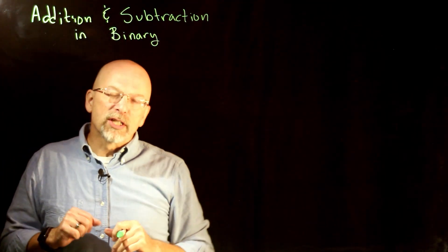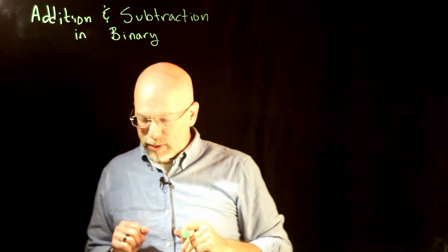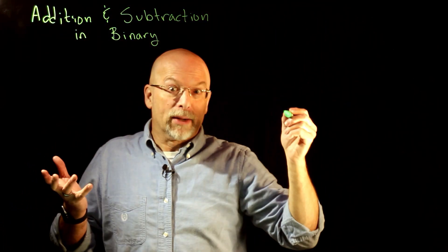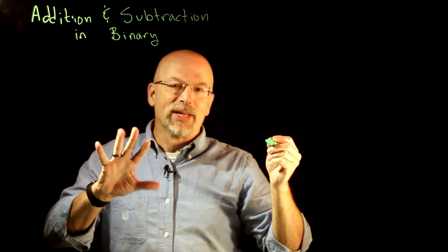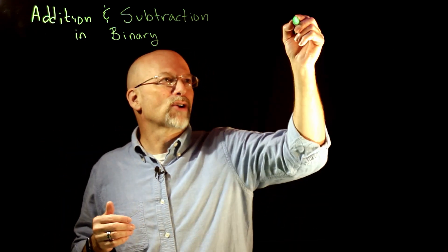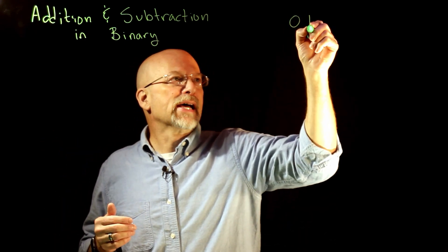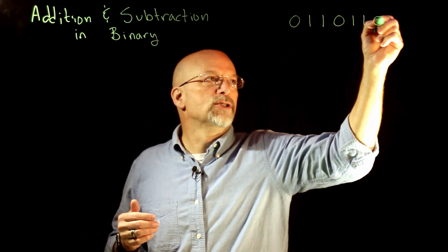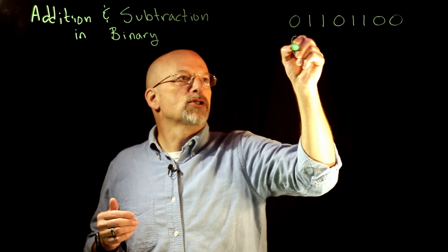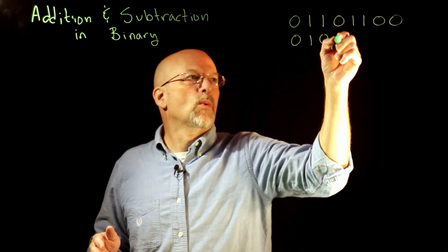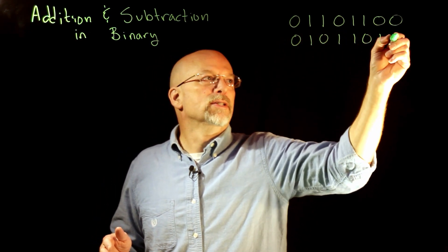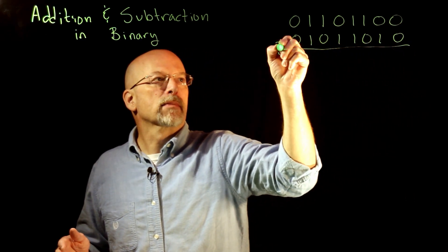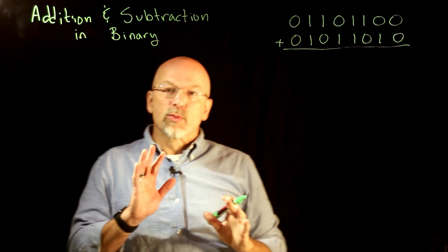So how do we do addition and subtraction in binary? Let's just go ahead and talk about it by doing an example. Let's add 0110110 to 0101101.